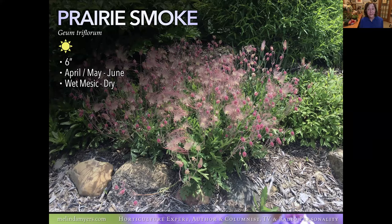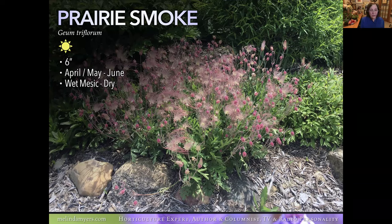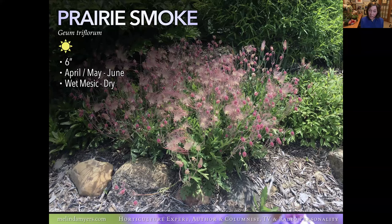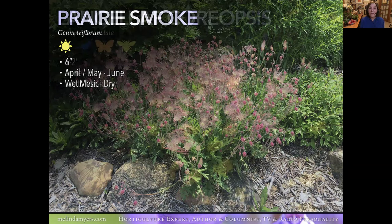Let's start with the six-inch Prairie Smoke. I use this in my regular gardens and native garden beds. The leaves look good all season long, and it spreads slowly — not obnoxiously — making a great ground cover that doesn't overtake its neighbors. The flowers are downward-facing and dark pink, and it's called Prairie Smoke because the seed heads look like smoke. You've got early-season blooms, persistent seed heads, and attractive leaves all season. It takes wet to dry, making it a great plant along the edge of your rain garden. The center where water collects is for moisture-loving plants; the edges are for plants that tolerate drier conditions.